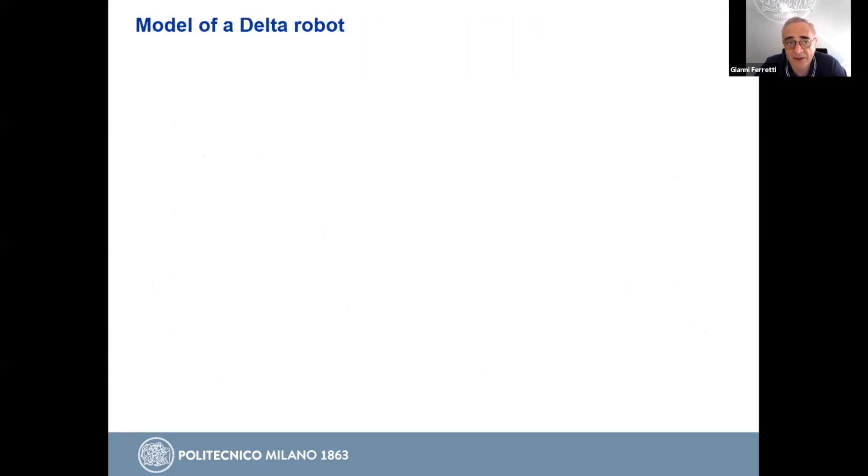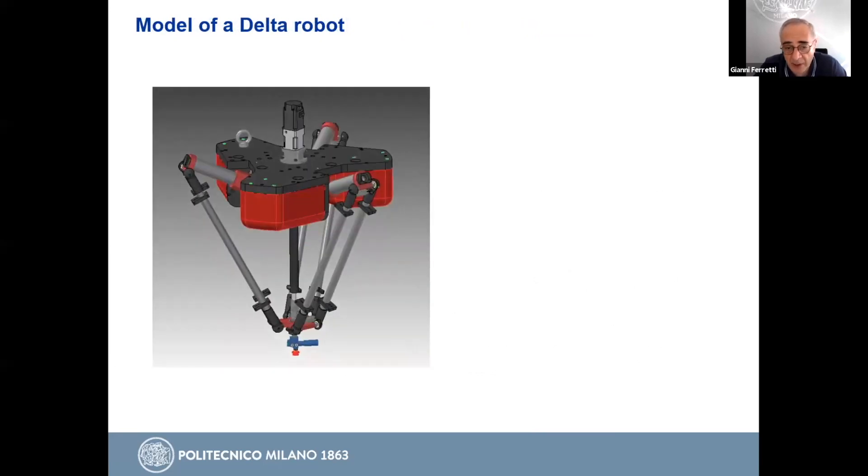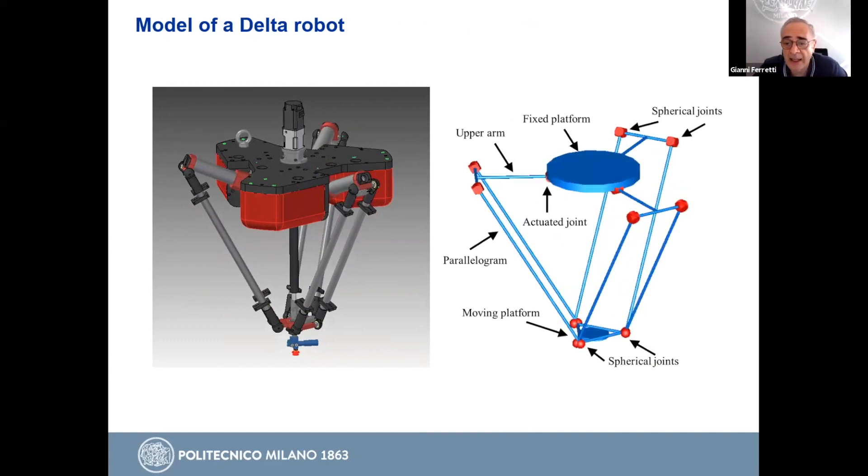So first we have to consider the model of a Delta robot. This is a real robot. Motors and several mechanisms are provided by Mitsubishi, while the mechanical structure was provided by an Italian firm. And the kinematic structure of the Delta model is well known, is depicted to the right. So we have two platforms, a fixed platform and a moving platform. The moving platform is moved through three legs, described by a parallelogram structure. And of course, the motion obtained is a translational motion of the moving platform in the space.